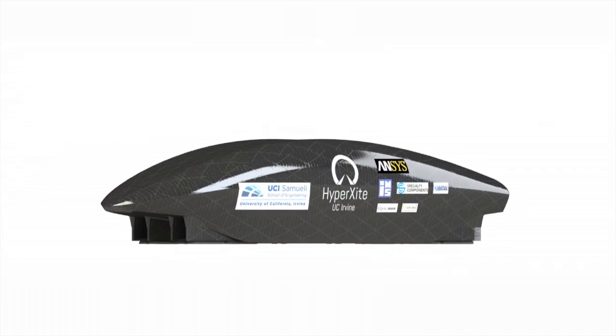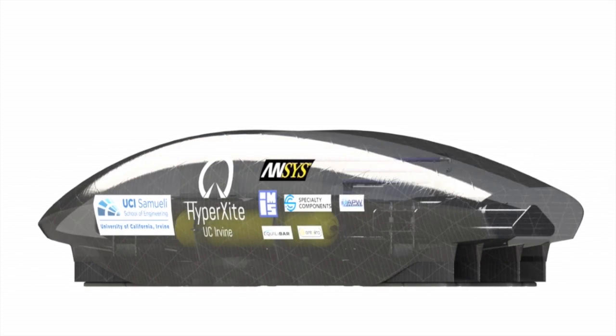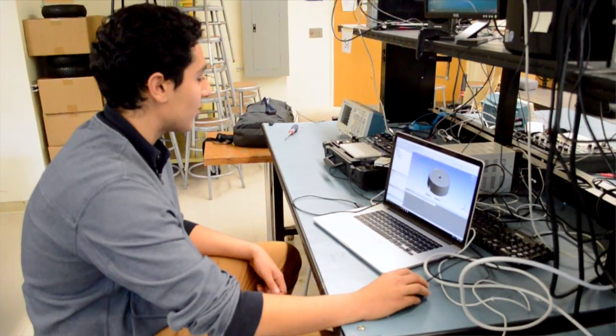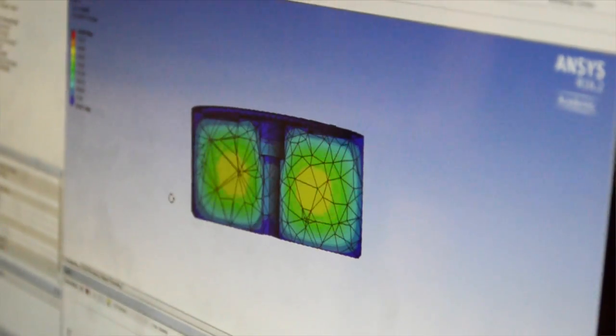We share a vision of creating a different way to move people around, a better way. HyperXcite's half-scale pod is meant to travel up to speeds of around 200 miles per hour on the one-mile test track. It's truly a product that couldn't exist without innovation across the many disciplines of the students on our team.